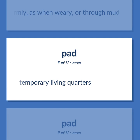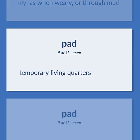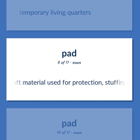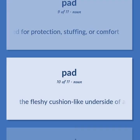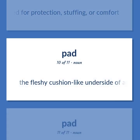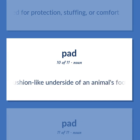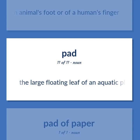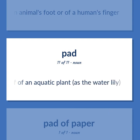Temporary living quarters. A flat mass of soft material used for protection, stuffing, or comfort. The fleshy cushion-like underside of an animal's foot or of a human's finger. The large floating leaf of an aquatic plant, as the water lily.